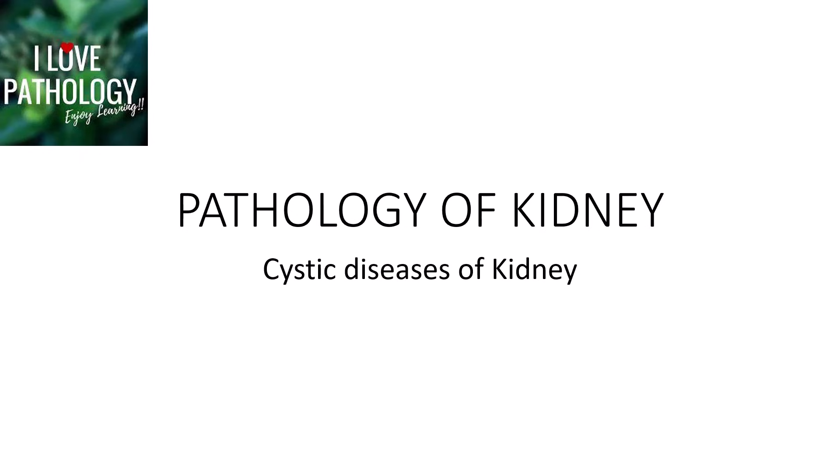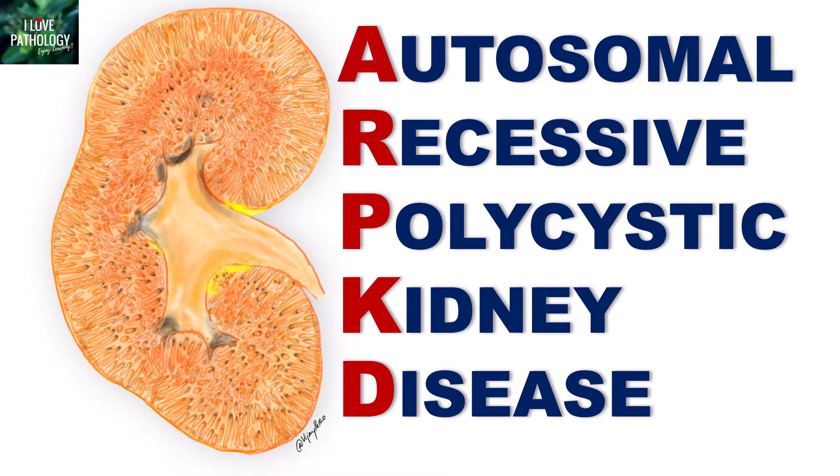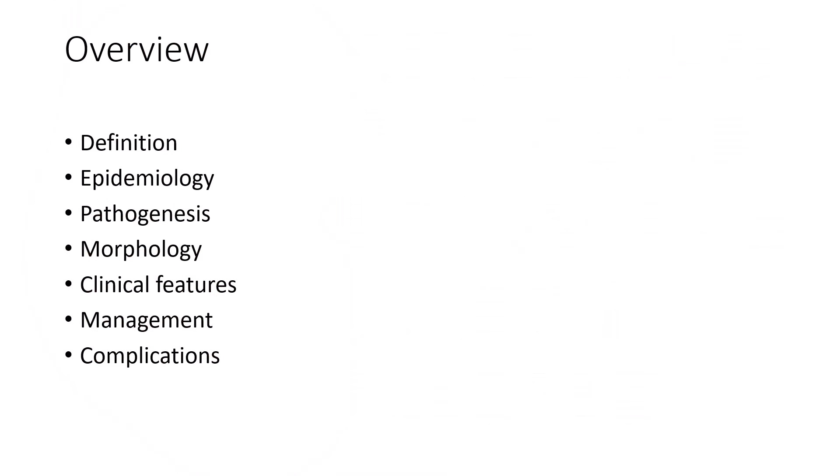Hi everyone, welcome back to this short tutorial from Pathology Made Simple at ilopathology.com. In continuation with the series on diseases of the kidney, we were discussing cystic diseases of the kidney. In my previous session, I talked about autosomal dominant polycystic kidney disease, and in today's session, I will be describing autosomal recessive polycystic kidney disease — covering epidemiology, pathogenesis, morphological features, clinical features, and management and complications.